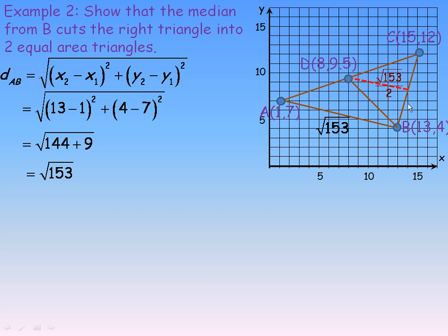So, this altitude over here is root 153 over 2. Now, let's find the base of this triangle right here, so the distance from B to C, using the 15, 12, and 13, 4 coordinates.